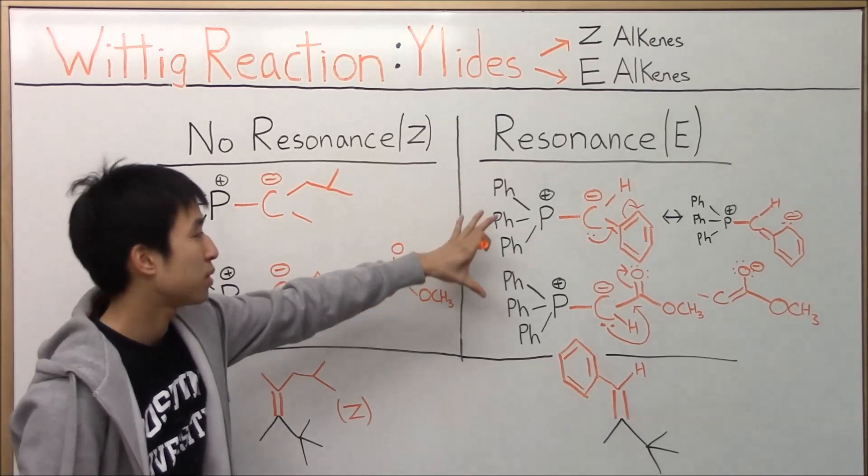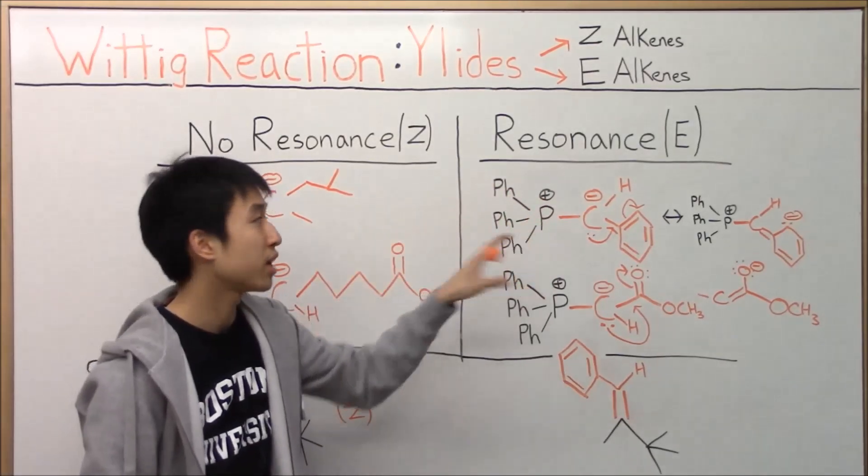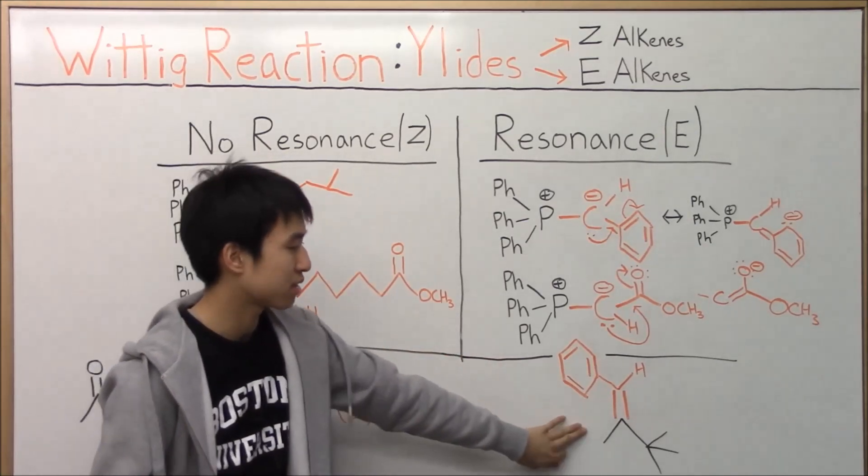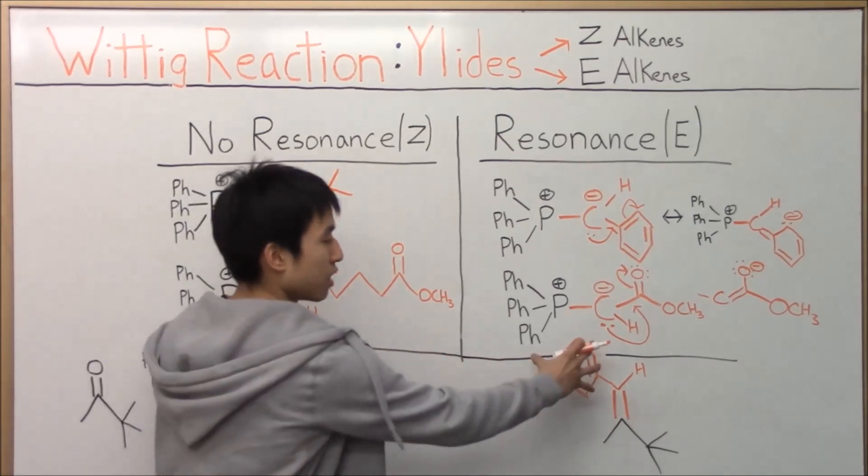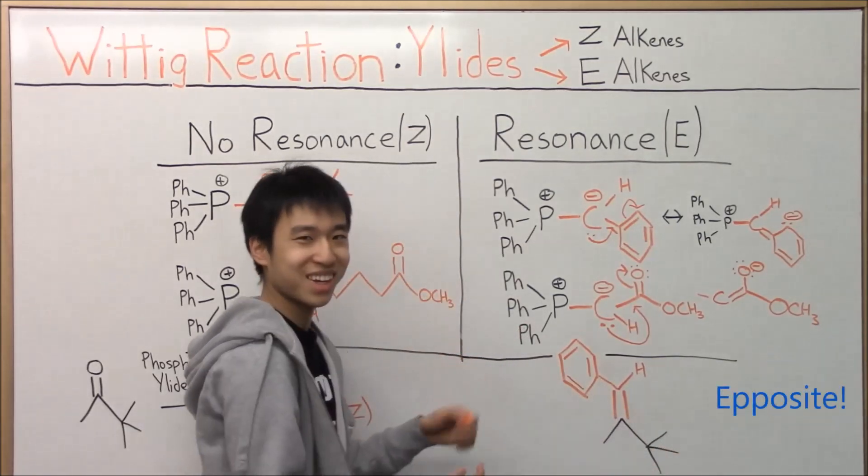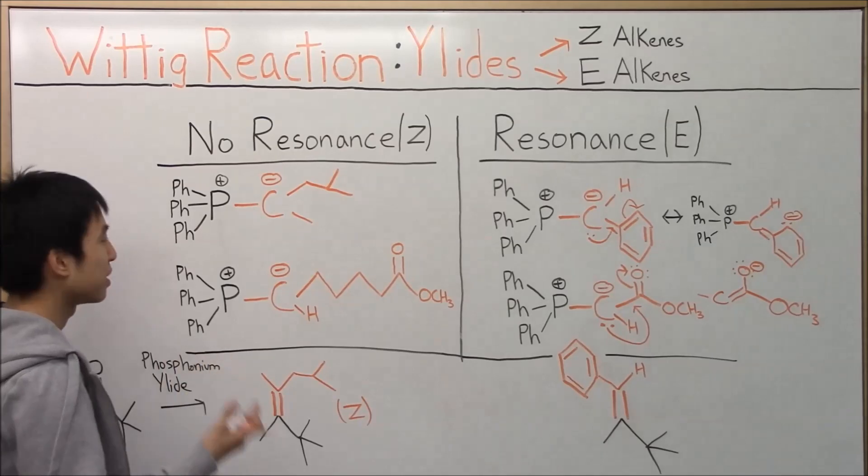So whenever you use ylids of these types with resonance occurring, make sure you draw your product with an E-alkene, just like how this looks like over here. E-alkene, the big groups or the higher priority groups are on opposite sides, right?